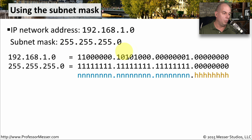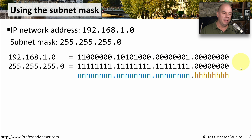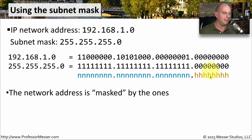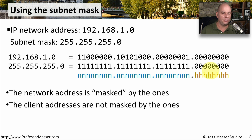Looking at 192.168.1.0 and the subnet mask, the subnet mask is a contiguous set of 1s — there are 24 ones in 255.255.255.0. Every place there is a 1 in the subnet mask represents the network address. Every place there is a 0 represents a host address. The network address is masked by those 1s — that's where the term subnet mask comes from. The client addresses are the 0s, marked here with an H for host.